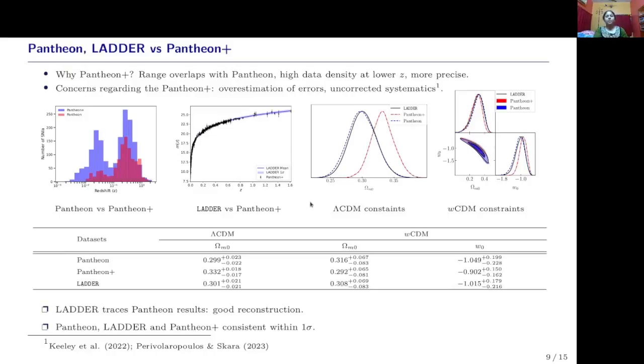Now, I shall move to discuss a few potential applications of LADDER within the current cosmological context. For this, we shall use LADDER as a consistency test to different datasets. First, I will take similar datasets, and then I will take into account datasets that are supposedly in apparent tension. I will also study calibration of high redshift data using this LADDER architecture. First, I will talk about consistency test with similar datasets, and for this exercise I will take Pantheon+. Pantheon+ is an immediate successor to Pantheon which has a high data density at lower z compared to the existing Pantheon compilation.